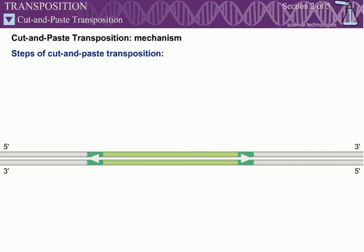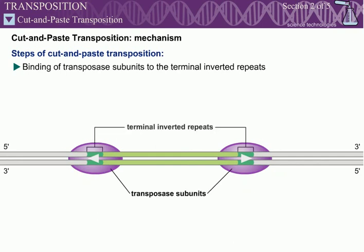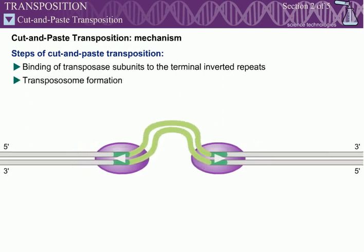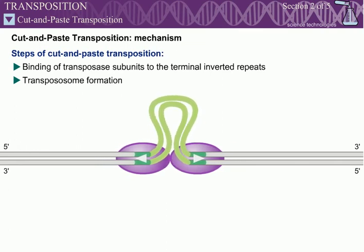We will now look at the cut-and-paste mechanism in more detail. To initiate transposition, transposase subunits bind to the terminal inverted repeats. Once the transposase subunits recognize these sequences, they bring the two ends together to generate a stable protein-DNA complex called a transpososome or synaptic complex. This complex functions to ensure that the DNA cleavage and joining reactions occur simultaneously on both ends of the transposon, and also protects the DNA ends from cellular enzymes during transposition.